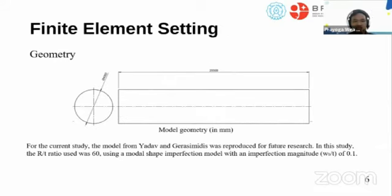Finite element setting geometry: For the current study, the model from Yadav and Geramisis was reproduced for future research. In this study, the radius-thickness ratio used was 60, using a model shape imperfection with an imperfection magnitude W0/T of 0.1. The diameter of the cylinder is 4000 millimeters and the length is 2000 millimeters.